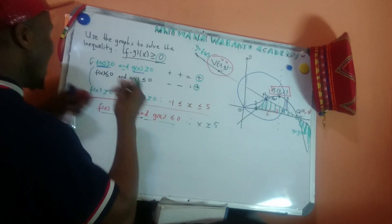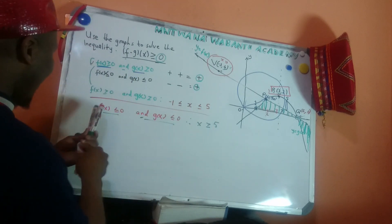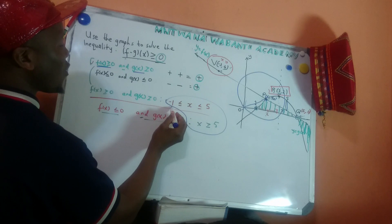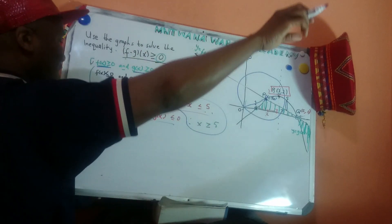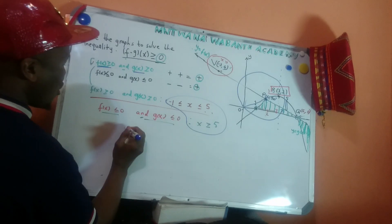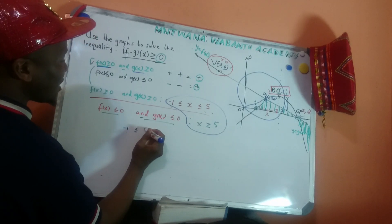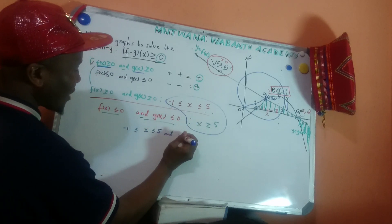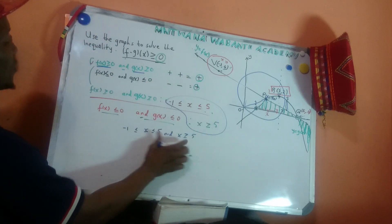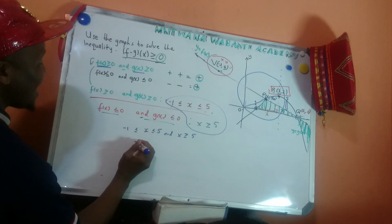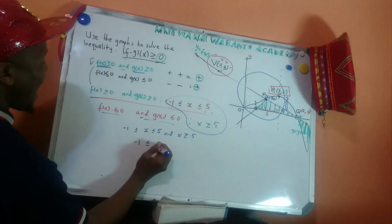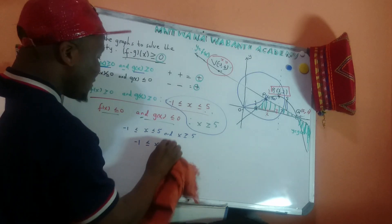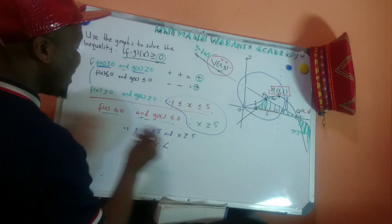Now let's combine both cases together. We have x from negative one to five, and x from five to positive infinity. So combining: negative one < x < 5 and x ≥ 5. Putting these together gives negative one < x, all the way to positive infinity. Note: we never include infinity, so we write positive infinity with a strict inequality.